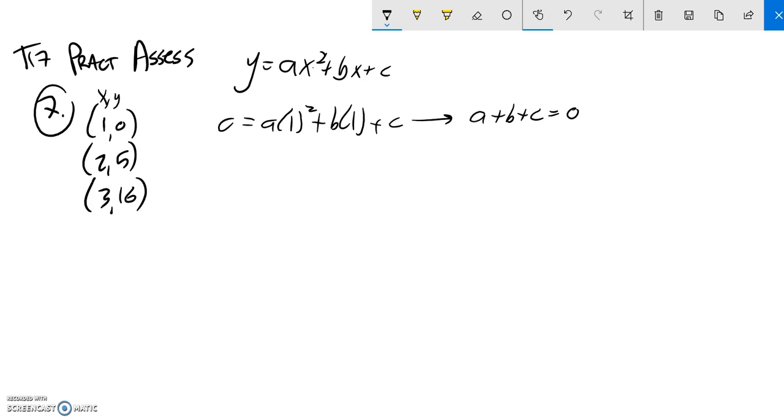And the next one, x is 2 when y is 5. So when y is 5, x is 2. So this would be 2 squared plus b times 2 plus c.